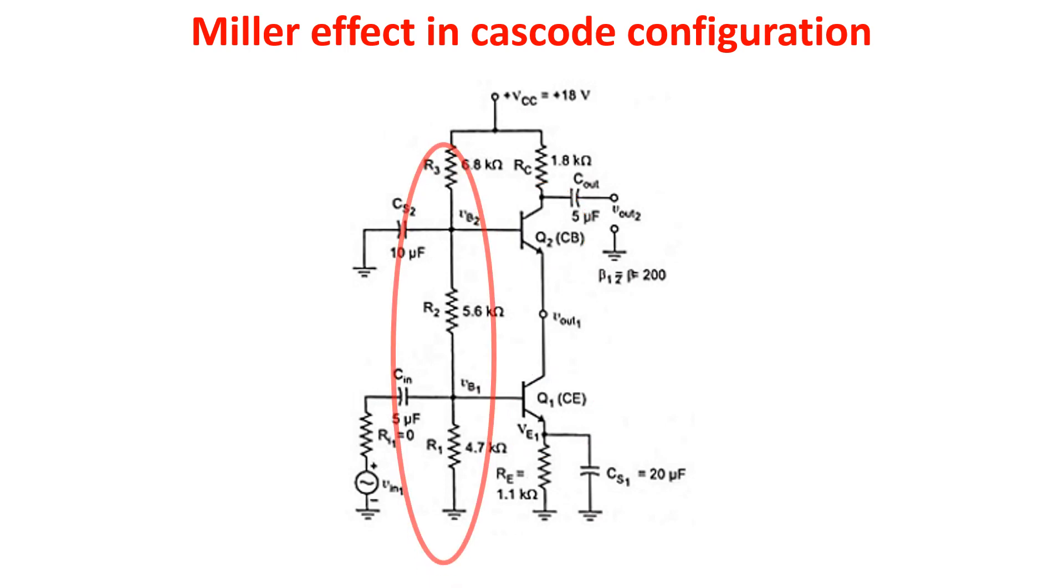Here a voltage divider for biasing our stage. Here the emitter degeneration resistor RE for improving the bias stability, and here the collector resistor involved in the gain of the stage.